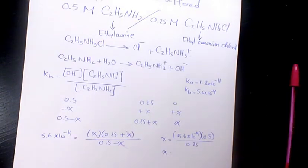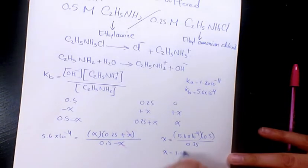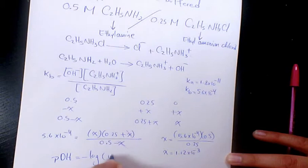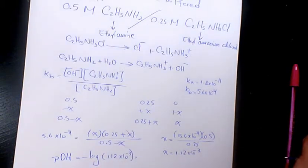That's gonna give me 1.12 times 10 to the power of negative 3. So pOH will be negative log 1.12 times 10 to the power of negative 3.